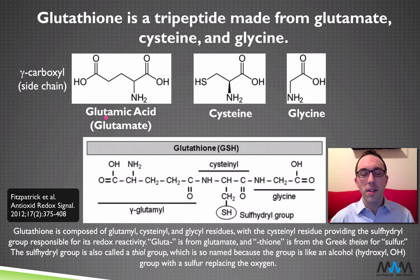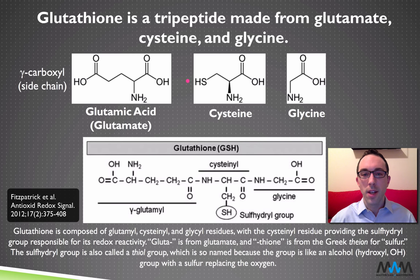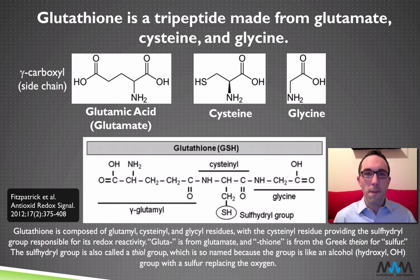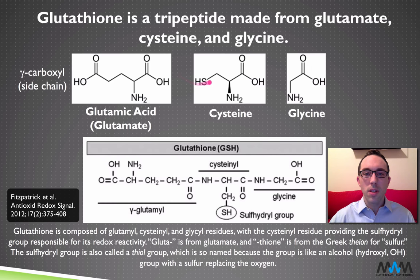The 'gluta' in glutathione refers to the glutamate. The 'thione' in glutathione refers to the sulfur that's in the side chain of cysteine. That SH is the same SH that we see in the abbreviation of glutathione, GSH, and it is emphasized even in that abbreviation because it's the part of the molecule that engages in every important reaction. So that sulfhydryl group is critical. We call glutathione a thiol because it has an SH or sulfhydryl group.